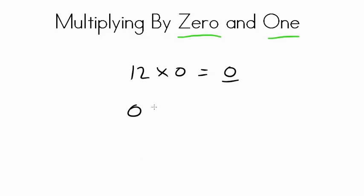How about 0 times 6? Did you say 0? If you said 0, you're correct. Any time that you're multiplying by 0, the answer is always going to be 0.